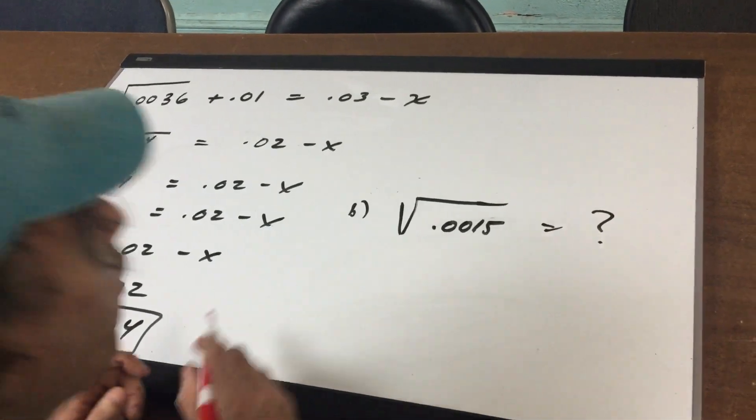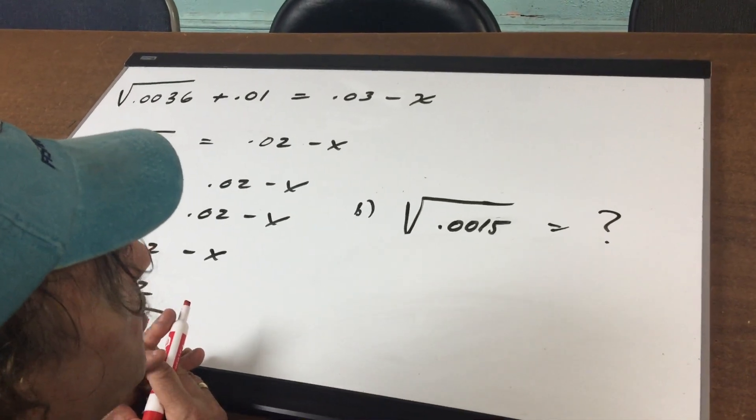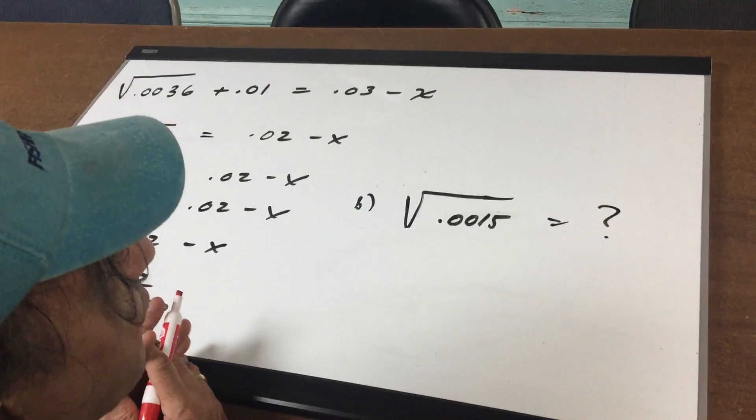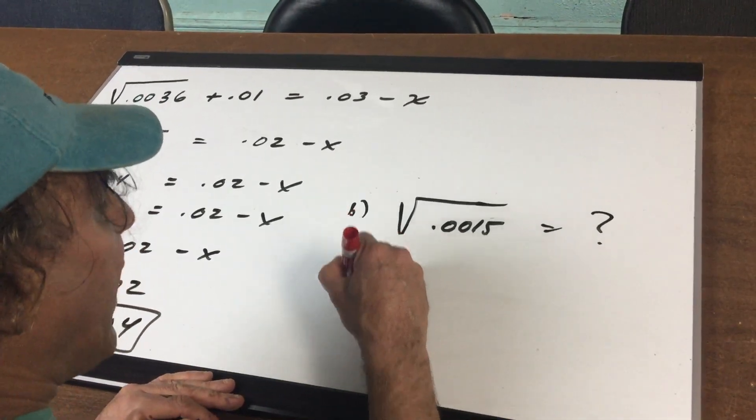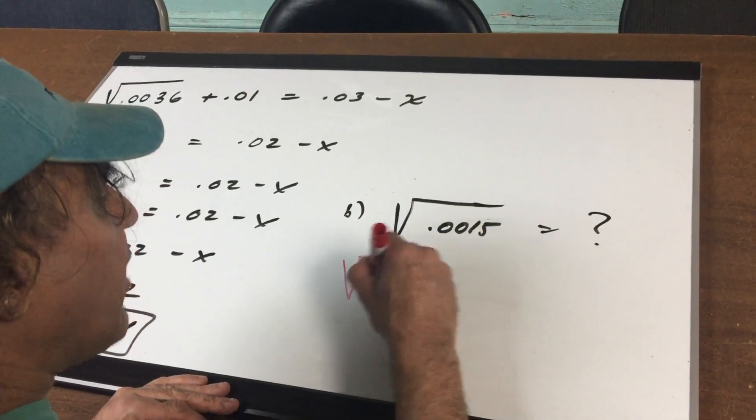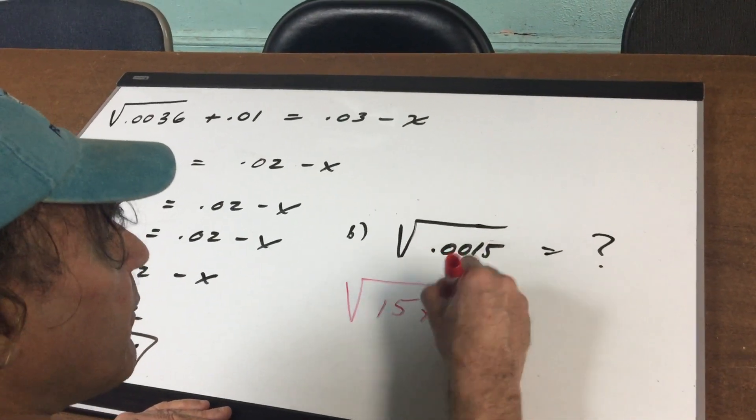Let's look at B. What if I asked you at lightning speed to evaluate the square root of 0.0015? What I would suggest is to rewrite this again as the square root of 15 times 10 to the minus 4th.